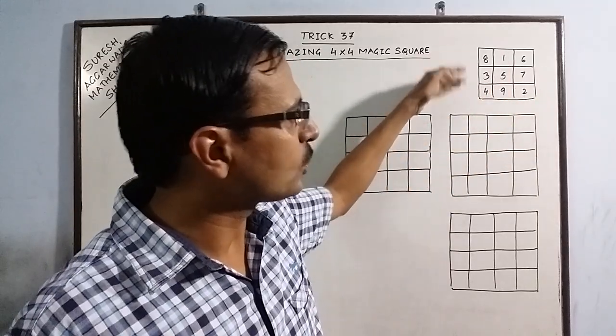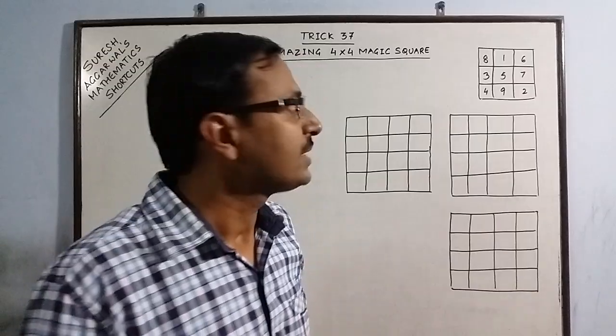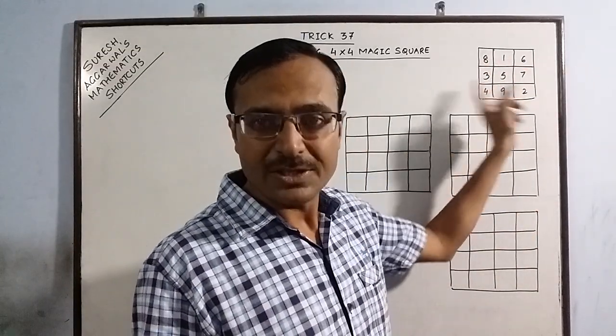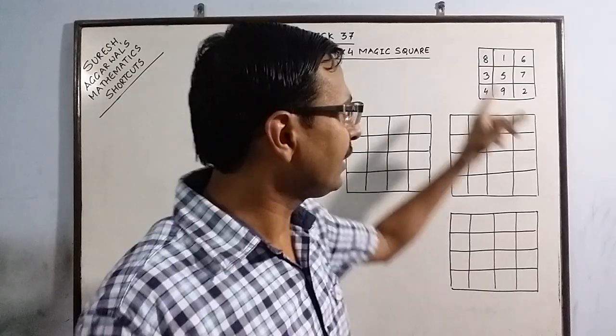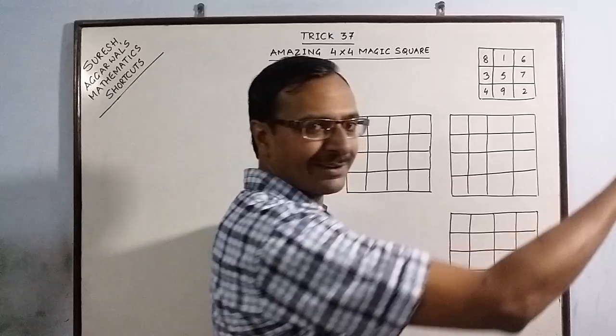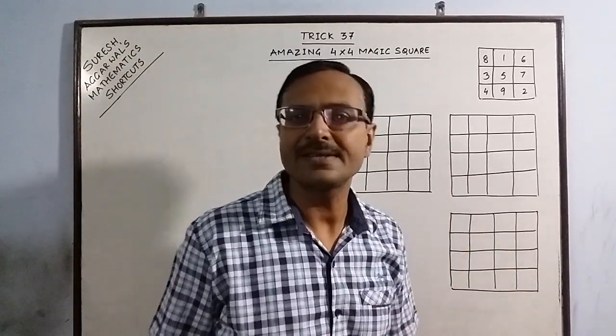It involves 3 rows and 3 columns and writing numbers from 1 to 9 such that the row total in each row is same. Here, in this case, the row total is 15. 8 plus 1, 9, 9 plus 6, 15. So, you add the 3 numbers in any row, you will get the sum 15.